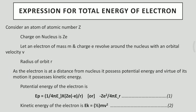Consider an atom of atomic number Z with nuclear charge Ze, and an electron of mass m and charge e, which revolves around the nucleus with orbital velocity v and orbital radius r. As this electron is at a distance from the nucleus, it possesses potential energy, and by virtue of its motion around the nucleus, it possesses kinetic energy as well. The potential energy is the amount of work done, which is force times displacement. The force is the electrostatic force of attraction given by Ze² / (4πε₀r²), and the distance is r, giving potential energy as −Ze² / (4πε₀r).